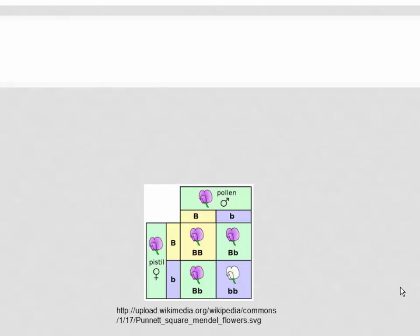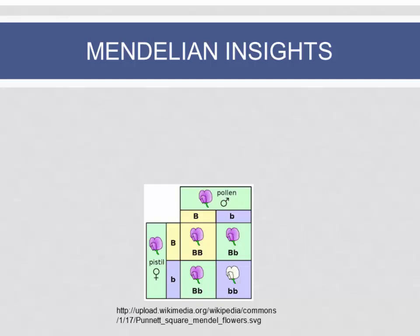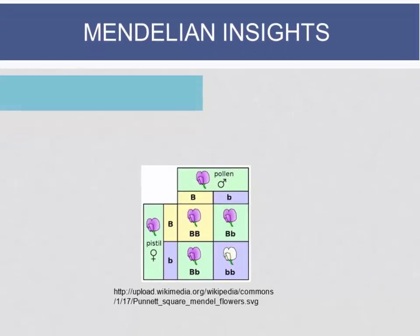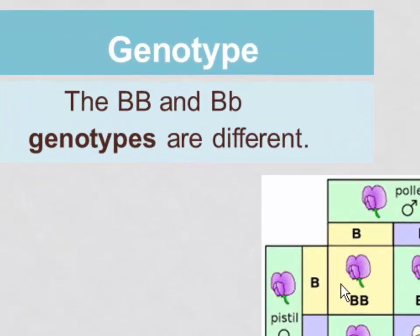Another way to think about the distinction between genotype and phenotype comes from Mendelian genetics — most of you are familiar with the Punnet square. It takes two different alleles of the same gene, the big B and the little b, and works out the possible combinations. This purple pea flower is big B, big B; but this other purple flower is big B, little b — so we get the same phenotype despite having a different genotype.